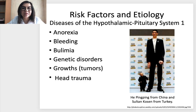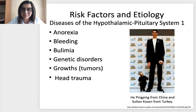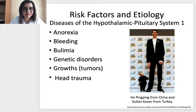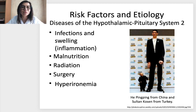Risk factors for diseases of the hypothalamic-pituitary system include: anorexia, bleeding, bulimia, genetic disorders, different growths or tumors, and head trauma. Here you see a very famous photo showing He Pingping from China — the smallest human in the world — and Sultan Kösen from Turkey, the tallest man in the world. Both have different disorders of the hypothalamic-pituitary system. Additional risk factors include infections, inflammation, malnutrition, radiation, surgery, and hypervitaminemia.